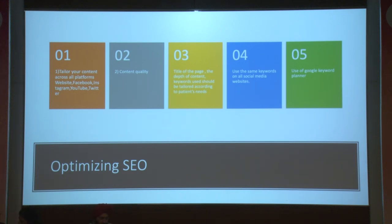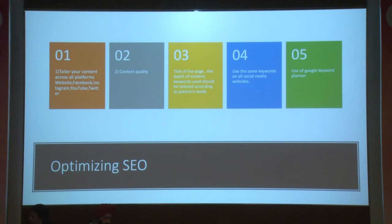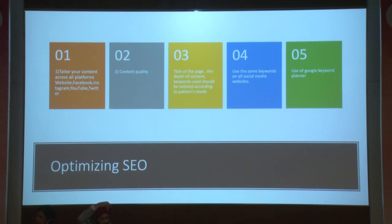There's something you can use called a keyword planner — Google keyword planner. You type in 'cataract' and it tells you what patients around your area are searching for. For example, the most common searches related to cataract might be: 'Is cataract surgery painless? What is the cost? How soon can I recover?' All of these are keywords you can take and implement into your content to keep the patient engaged.